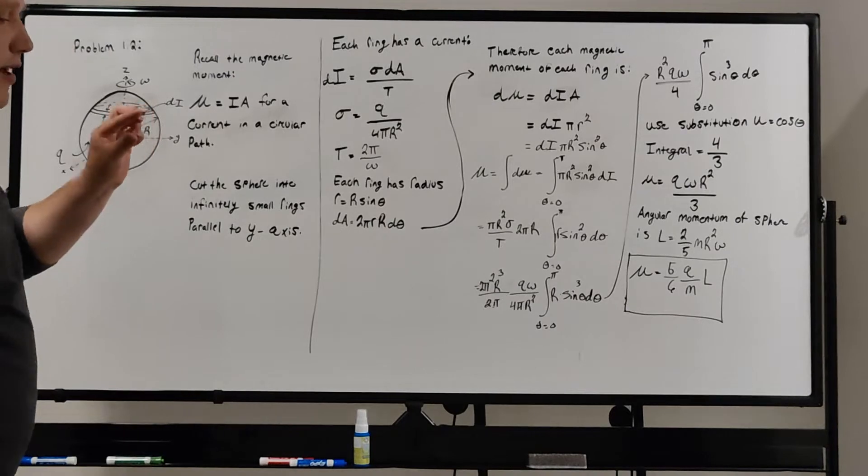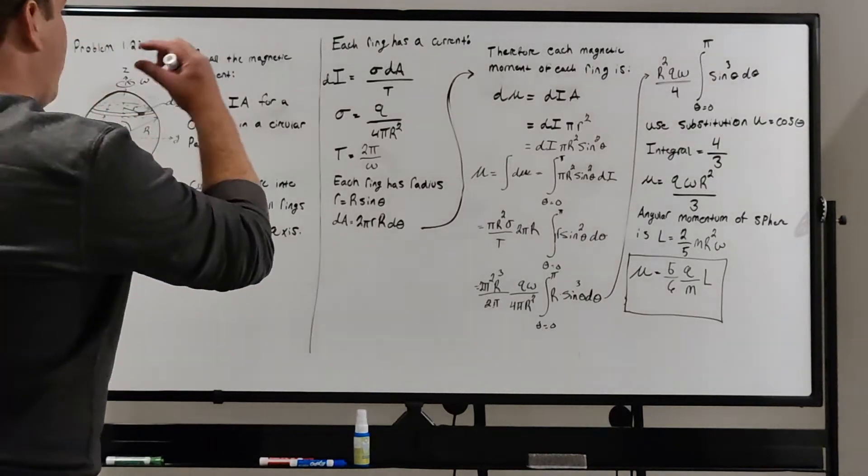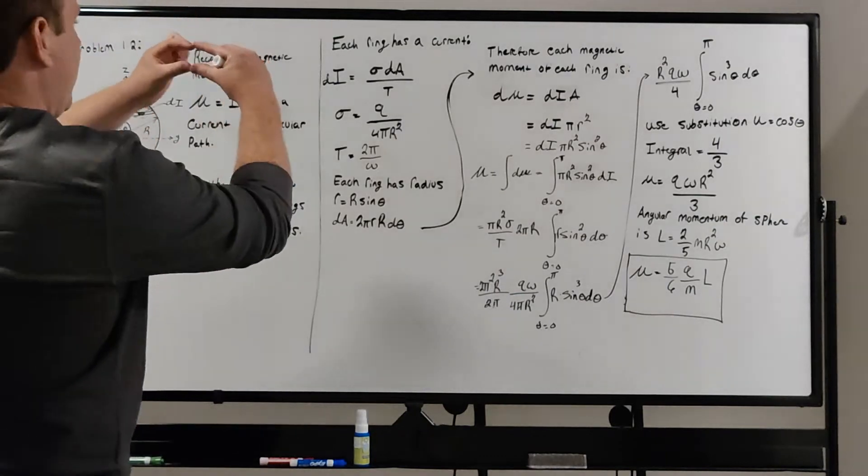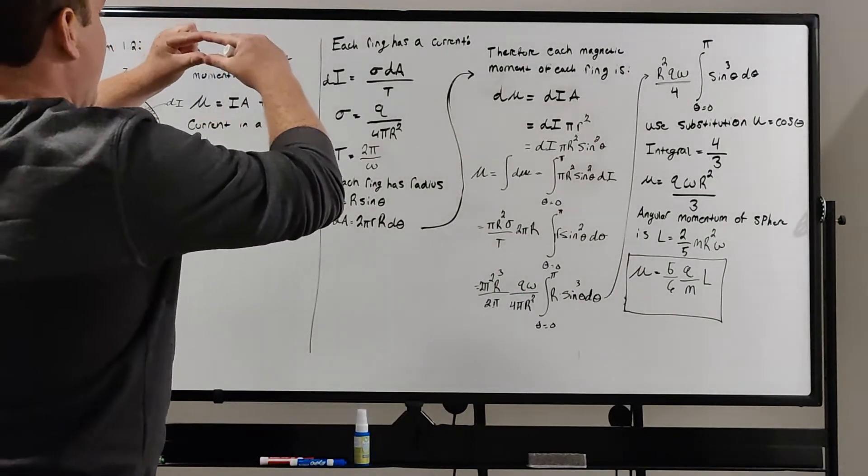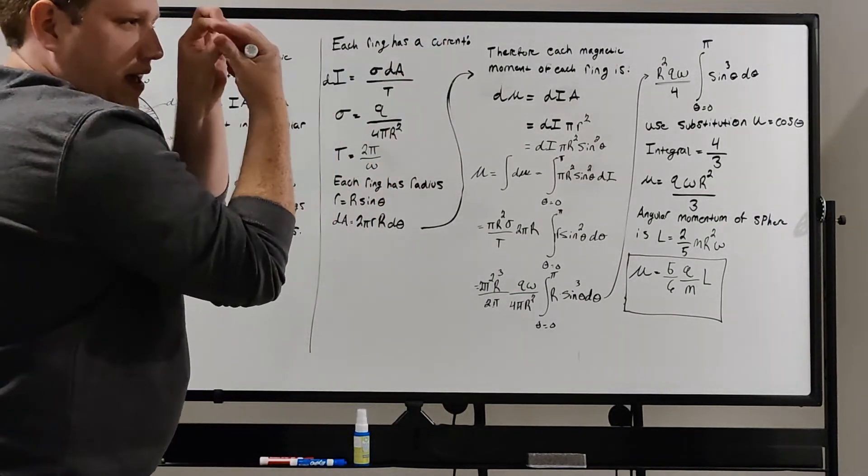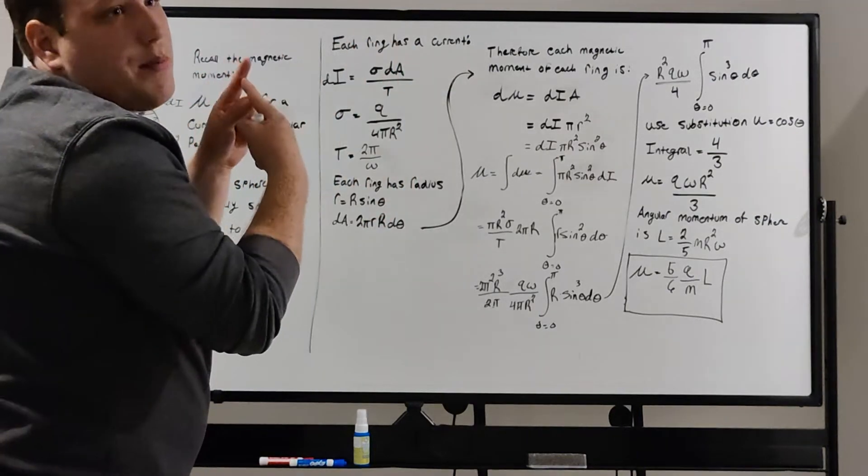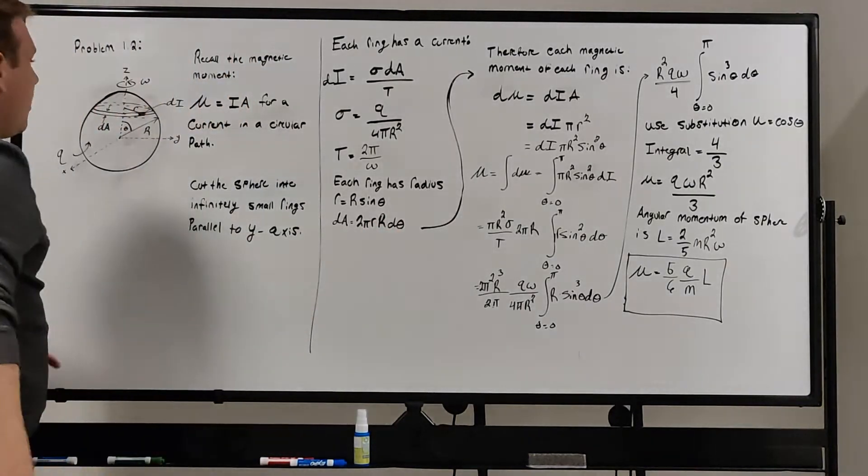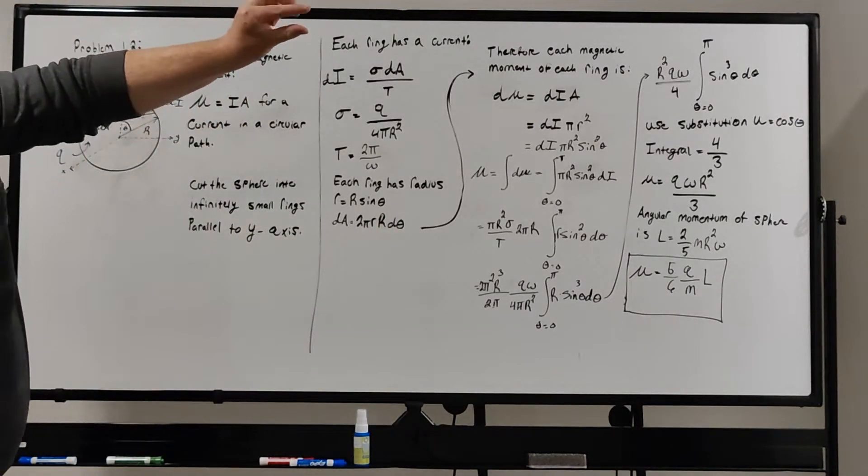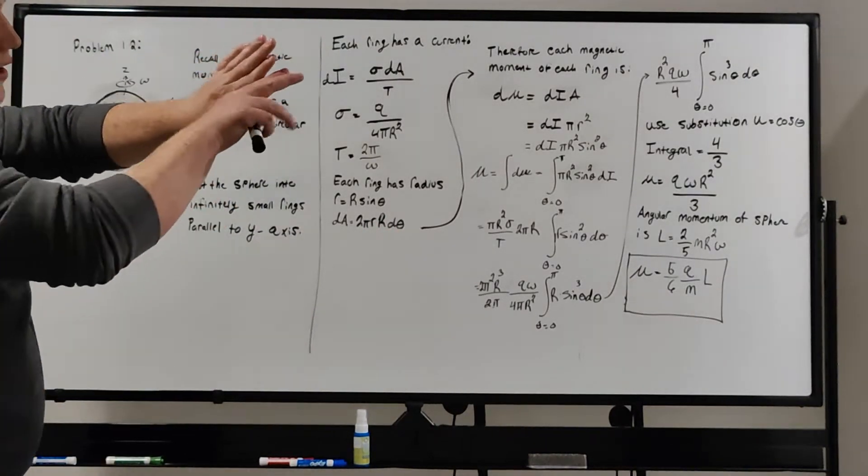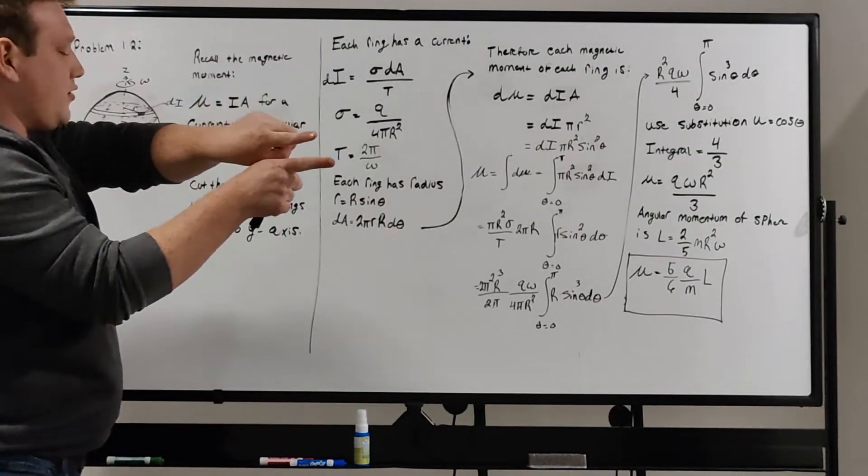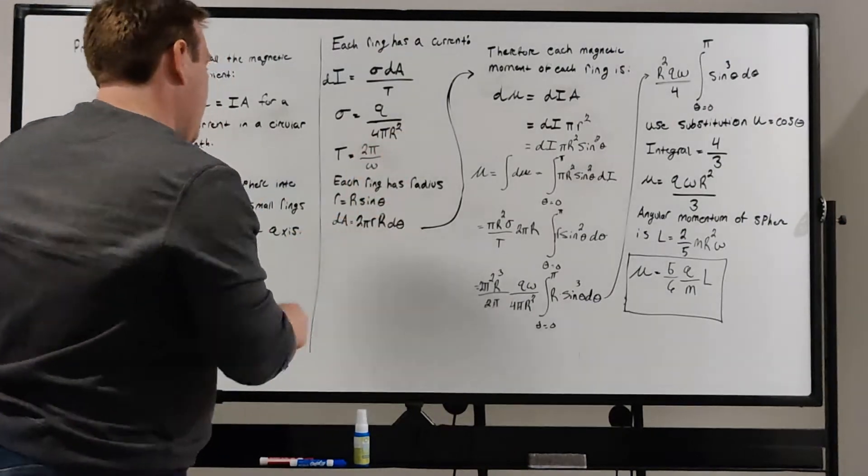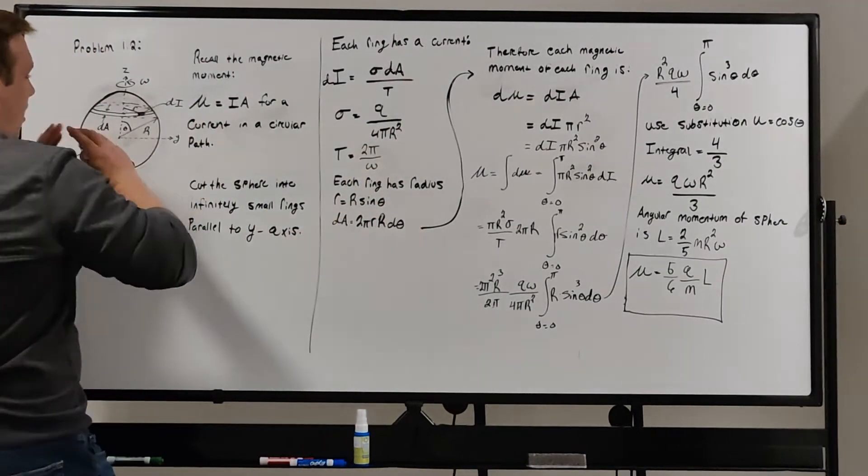dA here is the infinitesimal area of the ring, the infinitesimal width of that ring, that width all the way around the ring, the area of the strip around the ring, because that's where the charge lies. That's just R d theta, which is that infinitesimal spherical width, times the circumference 2 pi r. That gives you the infinitesimal area of each ring.